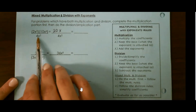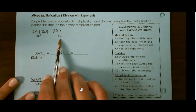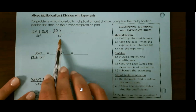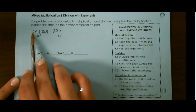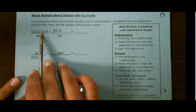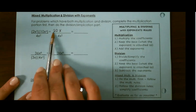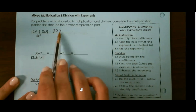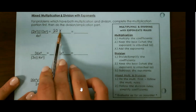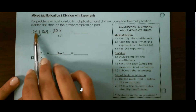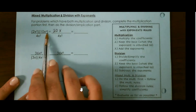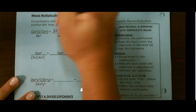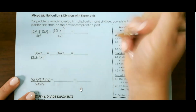Here, this has already been moved over because there's nothing we can evaluate yet. So we multiply the coefficients: 2 times 10 is 20. We always keep our base, which is x, and then we simply add the exponents: 3 plus 4 is 7.